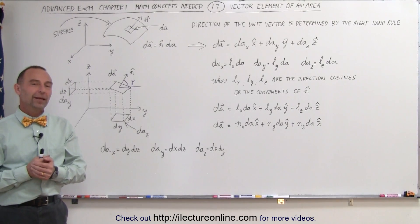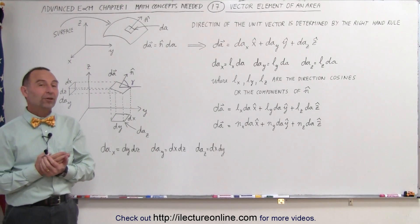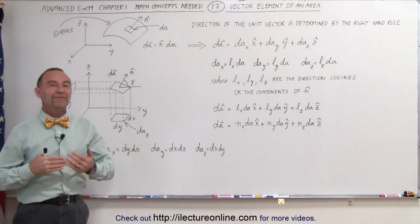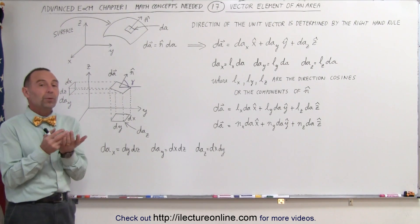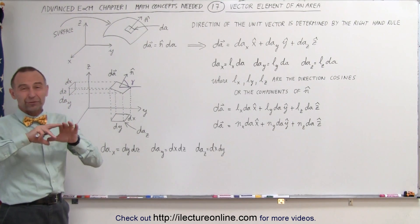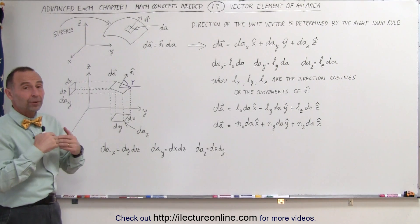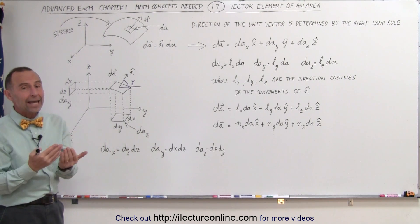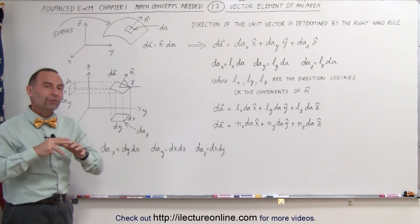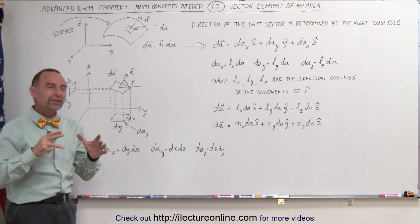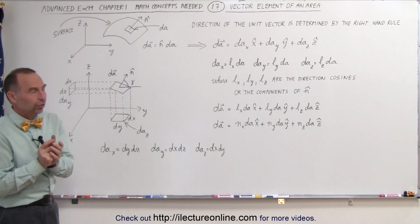Welcome to Electurnal Line. The next concept we're going to talk about is what we call the vector element of an area. Normally we think of an area of a surface or a small infinitesimal area of a surface as simply being a dA. But if we want to talk about it in terms of vector quantities, we have to have an area in a direction.